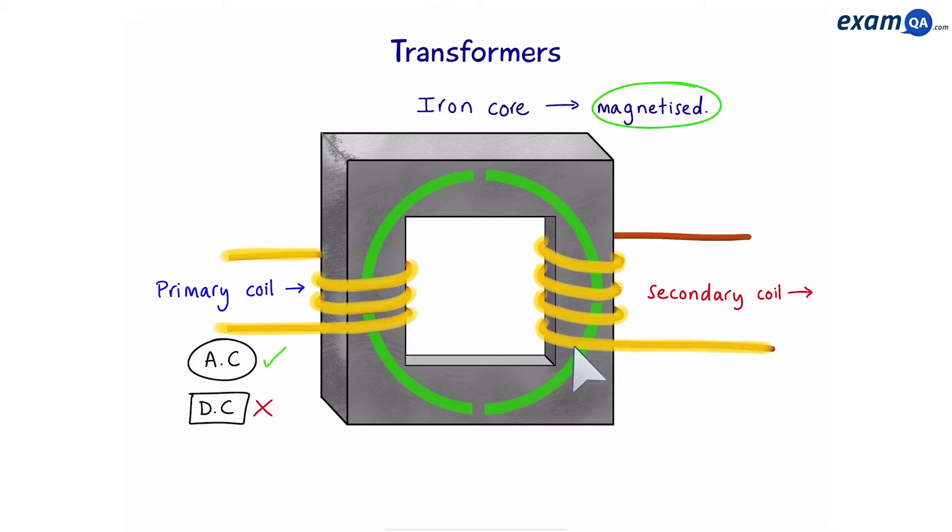Now it's important to note that in the primary coil, we have to have an AC coming in, an alternating current. This is so that we can create an alternating magnetic field. We cannot use a battery, for example, as this is a DC, direct current, and this would not produce an alternating magnetic field. We want a changing magnetic field to pass through the second coil, and the only way we can do that is by using an AC current.